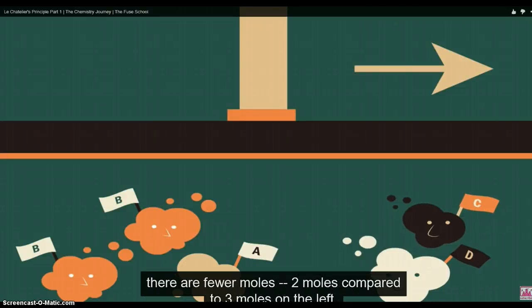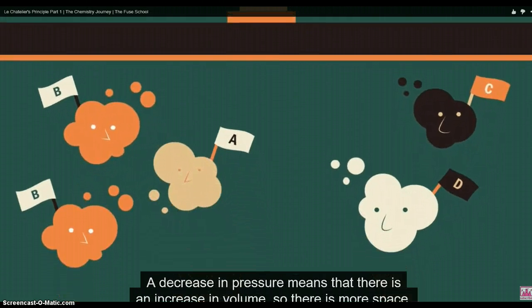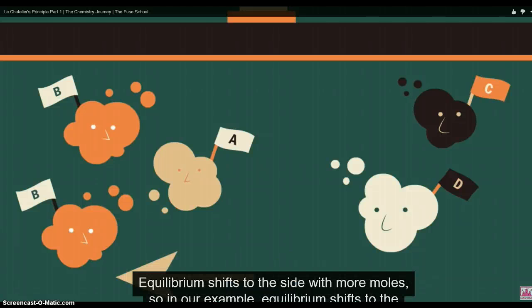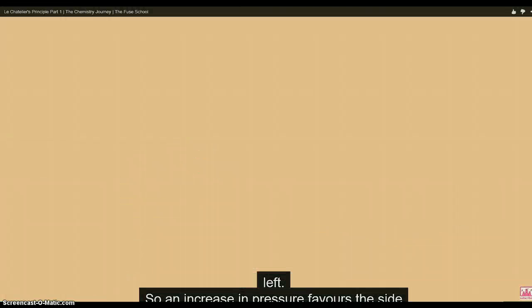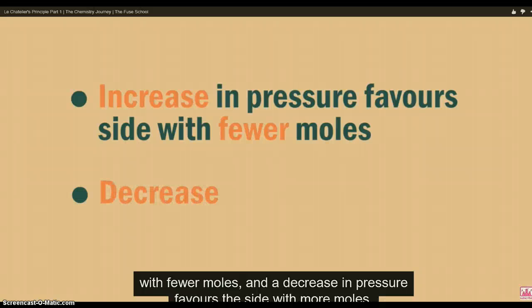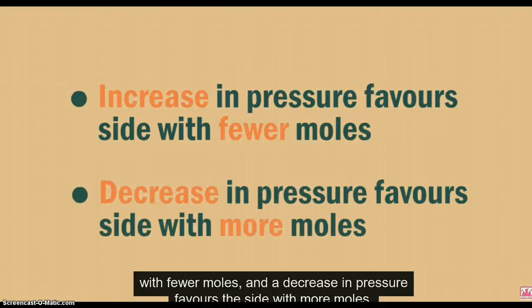Two moles on the right compared to three moles on the left. A decrease in pressure means that there is an increase in volume, so there is more space. Equilibrium shifts to the side with more moles, so in our example, equilibrium shifts to the left. So an increase in pressure favors the side with fewer moles, and a decrease in pressure favors the side with more moles.